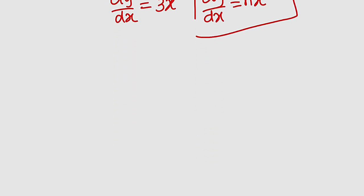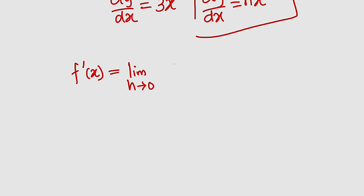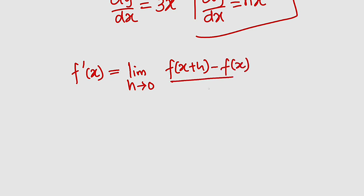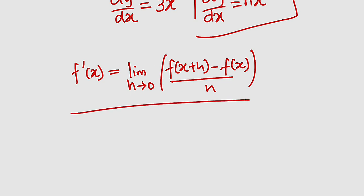From definition, dy over dx, which we can write as f prime of x, is equal to the limit as h approaches 0 of f of x plus h minus f of x, whole divided by h. This is just the definition from the first principle.